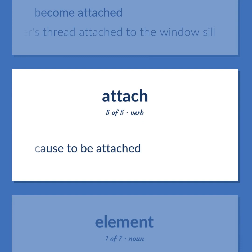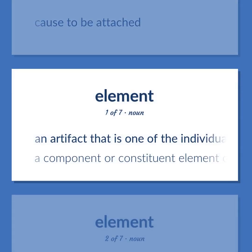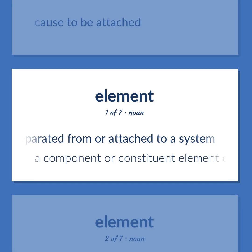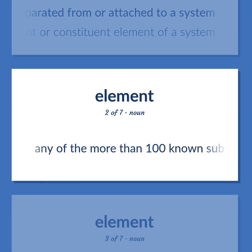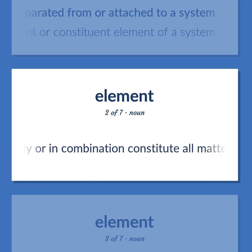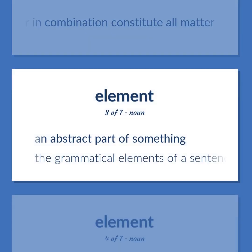Cause to be attached. An artifact that is one of the individual parts of which a composite entity is made up, especially a part that can be separated from or attached to a system. A component or constituent element of a system. Any of the more than 100 known substances, of which 92 occur naturally, that cannot be separated into simpler substances and that singly or in combination constitute all matter. An abstract part of something. The grammatical elements of a sentence.